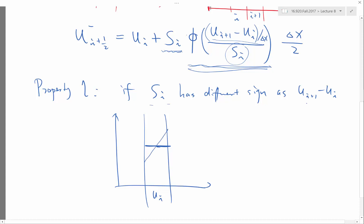But u_{i+1} minus u_i is negative. That means u_{i+1} is actually lower than u_i. What kind of phi should I multiply for me to not create a new maximum here? Zero.